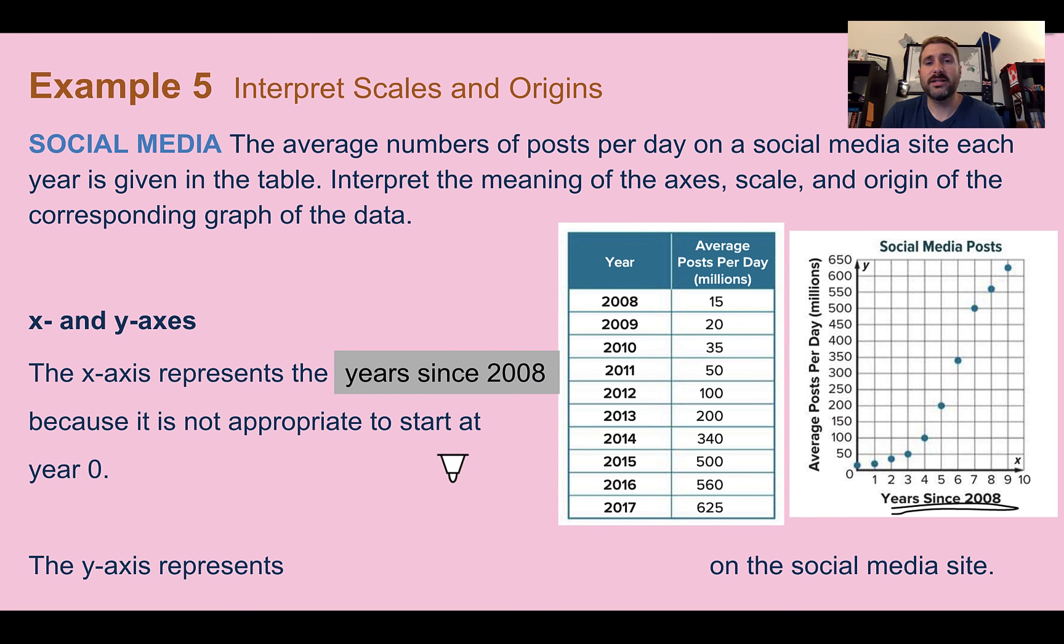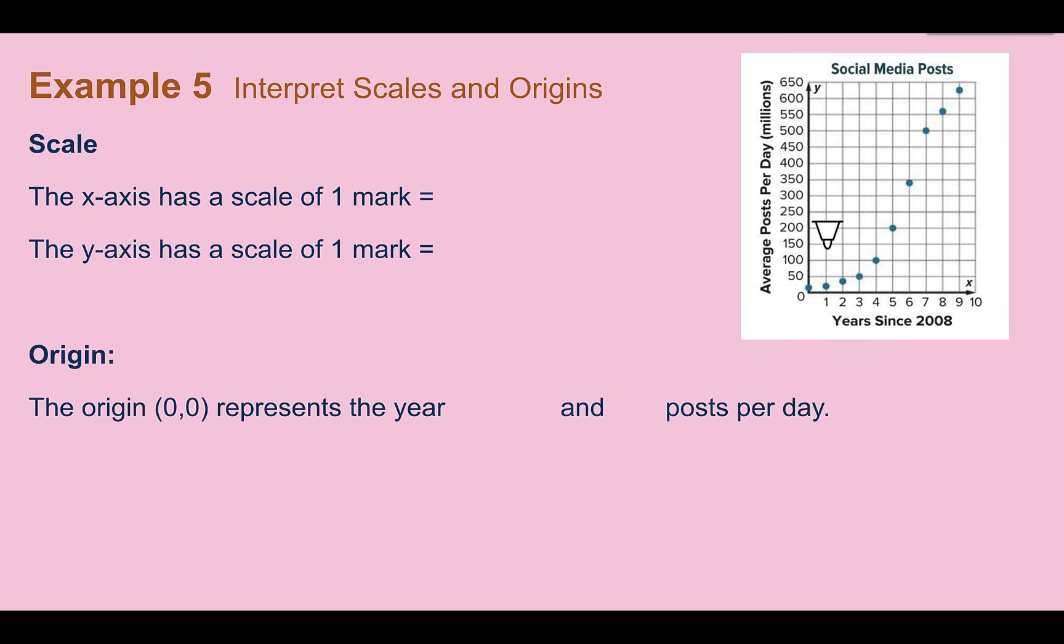Because we can't start at year 0, count all the way to 2008, and then still have a scale of 1. That's not really possible. Our y-axis is the average posts per day in millions. Looking at our graph, let's determine our scale. So on the graph, it counts by 1s. So 1 mark is equal to 1 year. For the y-axis, we are counting up by 50.